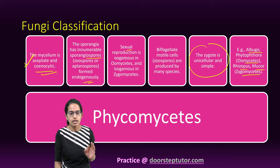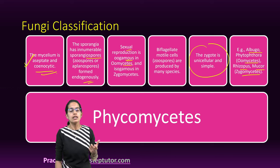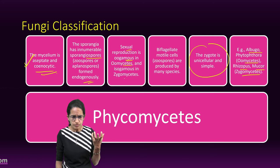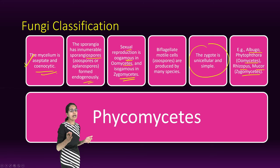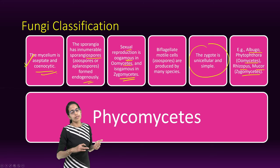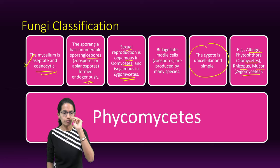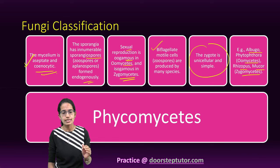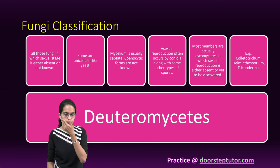The sexual reproduction occurs as oogamous in Oomycetes and isogamous in Zygomycetes. The zoospores have biflagellate motile cells, and these are classic characteristics in many of the species.